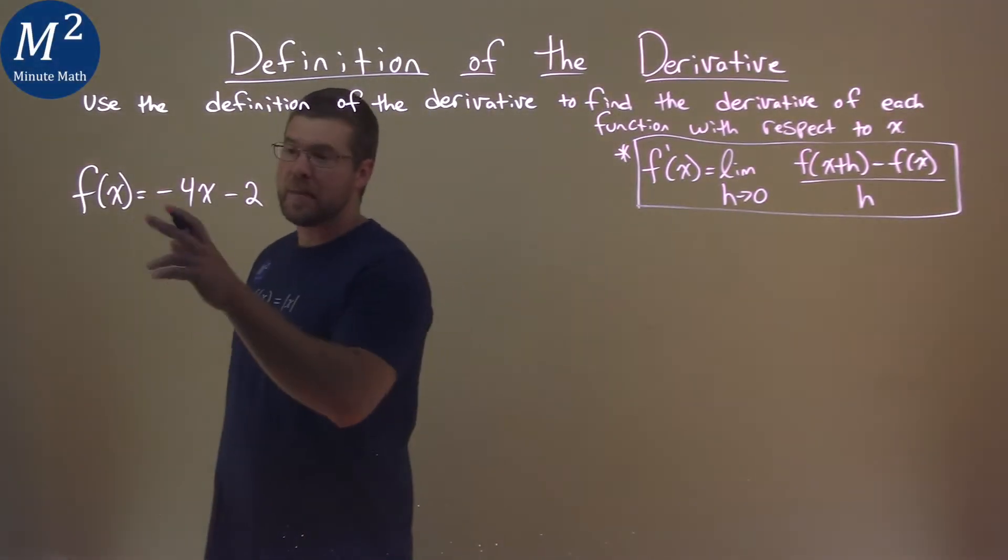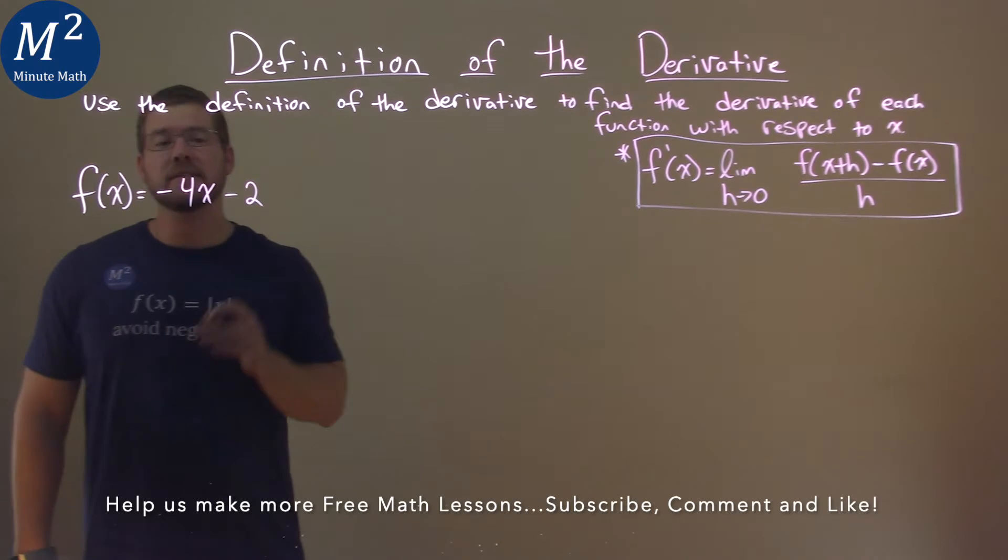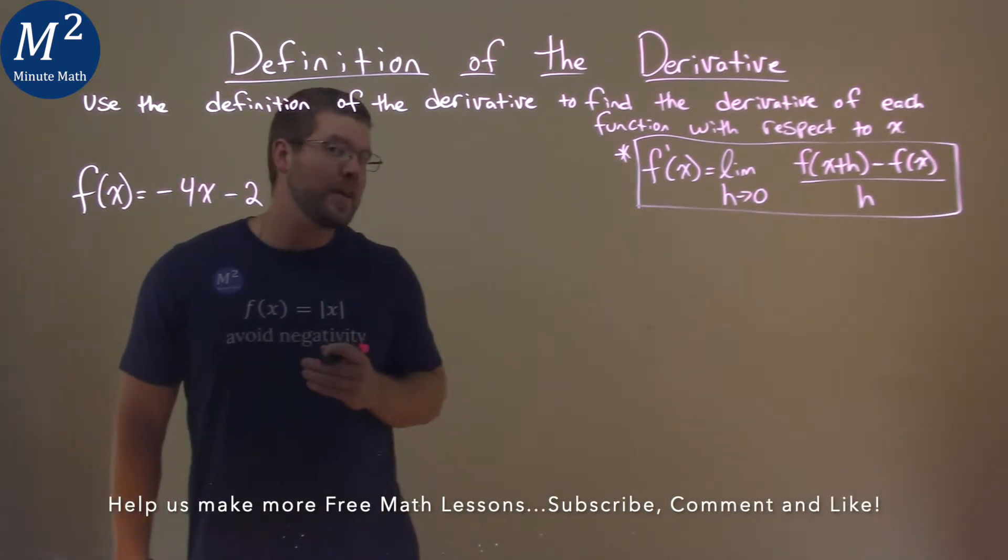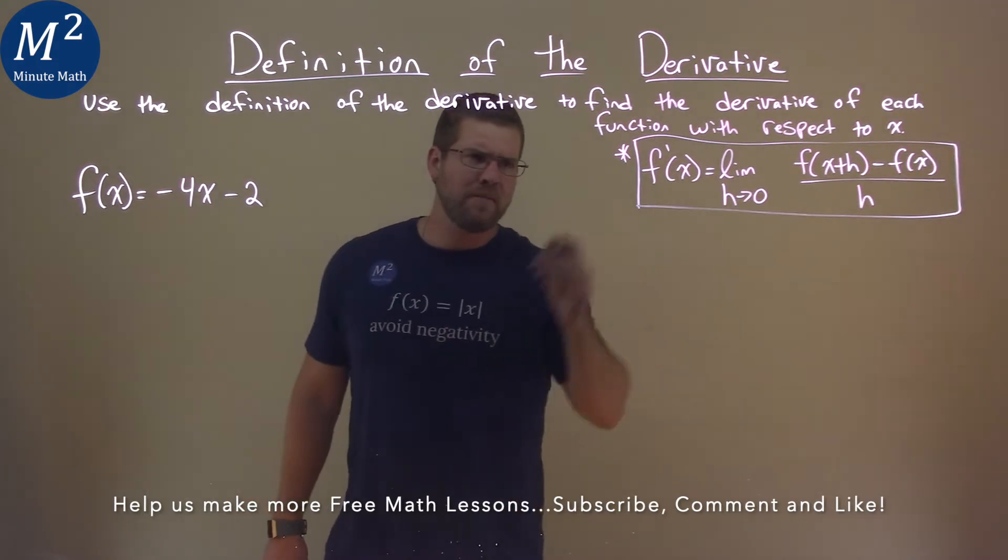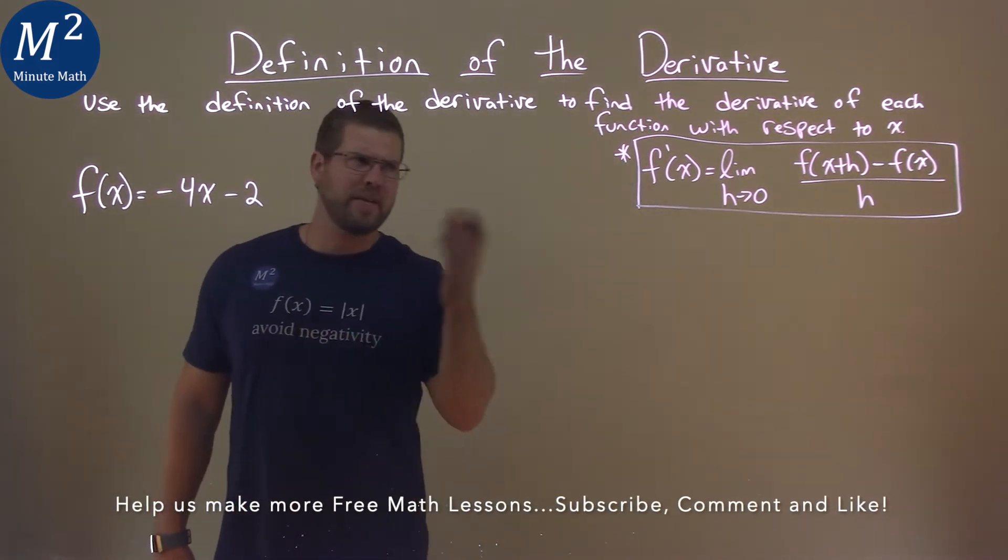We're given this problem right here. f(x) is equal to negative 4x minus 2, and we have to use the definition of the derivative to find the derivative. We have that formula right here, or the definition right there.